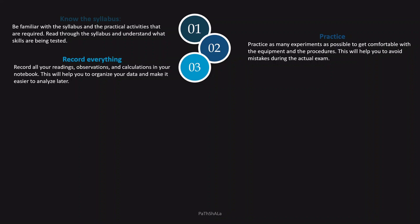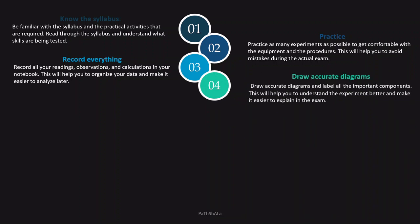Fourth is to draw accurate diagrams. Diagrams play a very important role in sciences, basically in IGCSE sciences. So draw accurate diagrams and don't forget to label all the important components. This will help you to understand the experiment better and make it easier to explain in the exam.